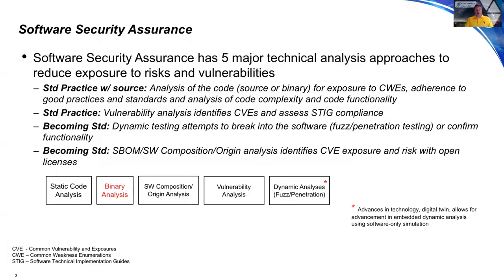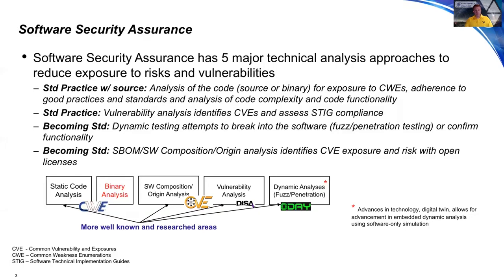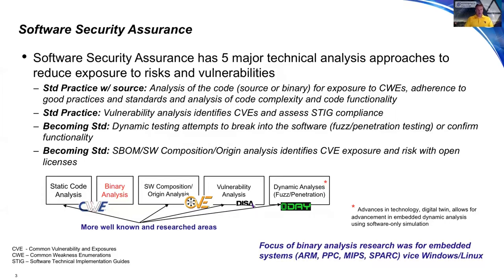Those are the five areas of software security assurance. Binary analysis is not the only solution, but it's a key component — especially when we don't have source code. Binary static code analysis is where you can typically find CWEs. Composition analysis helps find compliance and CVEs, while zero-day discoveries come more from dynamic analysis and fuzzing. Binary analysis is becoming well-researched but is not quite as widespread on the embedded side — that's what we're going to focus on, not so much the Windows and Linux aspects.